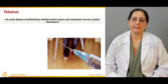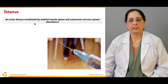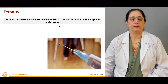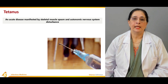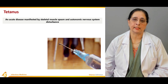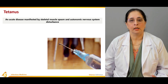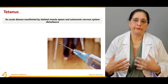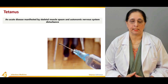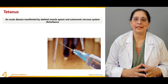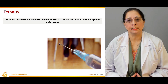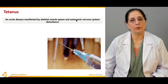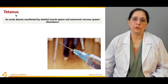So first, what is tetanus? Tetanus is an acute disease which is manifested by skeletal muscle spasms and autonomic nervous system disturbance. The definition is mainly the spasm of the skeletal muscle — muscles attached to the skeleton and responsible for different movements of the body. When spasm of those muscles occurs along with disturbance of the autonomic nervous system, that is known as tetanus.